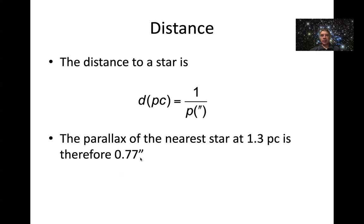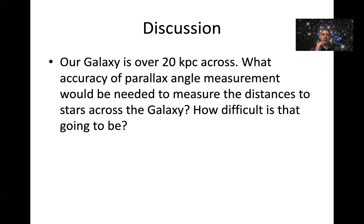And so thinking about what we talked about earlier, another little thing for you to ponder during the next five minute break is that, you know, we live in our galaxy, Milky Way, and our galaxy is at least 20 kiloparsecs across. So 20,000 parsecs across. So have a think about what kind of accuracy you would need in parallax angle measurement if you wanted to measure the distances to stars all the way across the galaxy. So have a think about that, and then how difficult, given what we talked about earlier, is that going to be? So have a quick think about that, and we'll be back in five minutes.